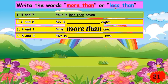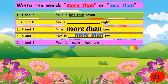Next, number four: five and two. So five — is it more than or less than? Very good, it is more than. Five is more than two. Next, number five: four and one. Is it more than or less than? That's right, four is more than one.